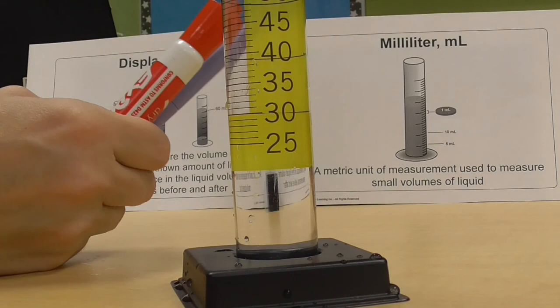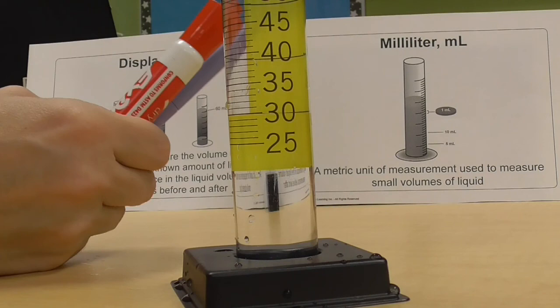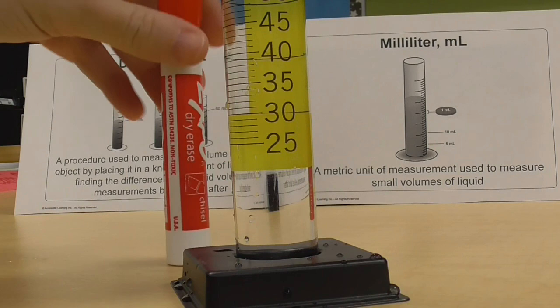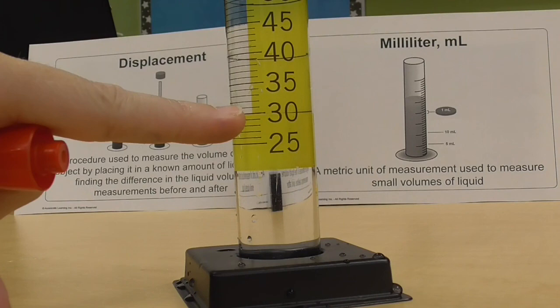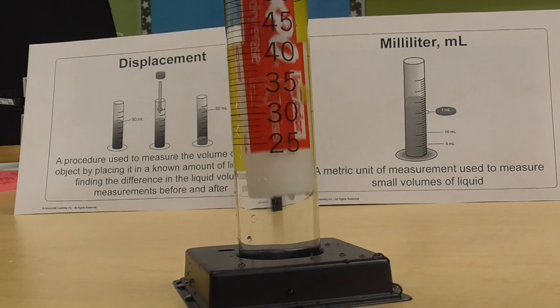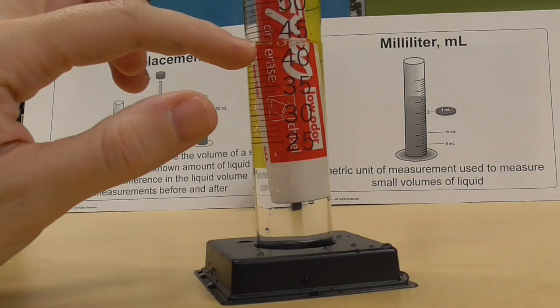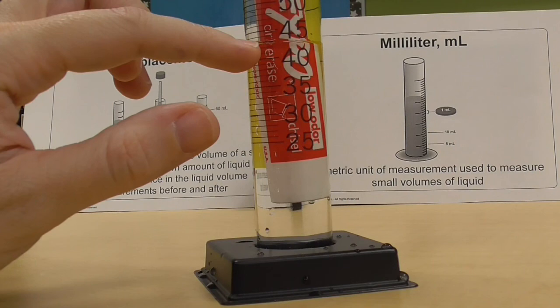So when I drop one of my irregular shaped objects, I'm going to do my marker. We're going to see the end volume of what it ends at after we drop it in. So this is our beginning, 30 milliliters. When I drop it in like so, there it is. It went all the way up here. That's 41, 42, 43. I'm at 43 milliliters. So I started at 30. I ended at 43.